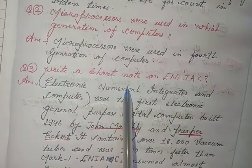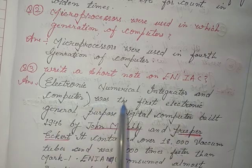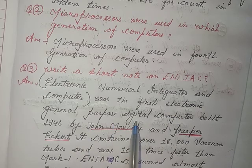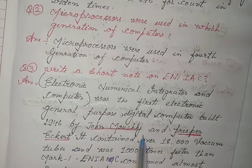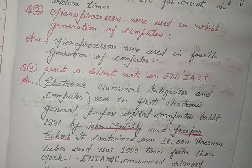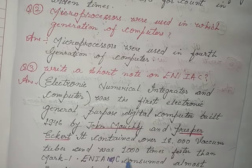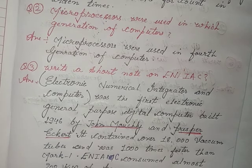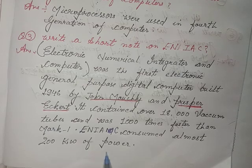Third, write a short note on ENIAC. Answer: Electronic Numerical Integrator and Computer was the first electronic general purpose digital computer, built in 1946 by John Mauchly and Presper Eckert. It contained over 18,000 vacuum tubes and was 1,000 times faster than Mark 1. ENIAC consumed almost 200 kW of power.